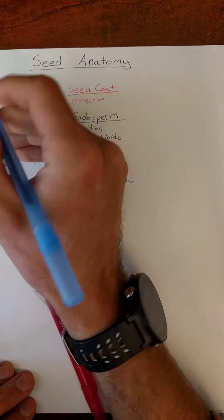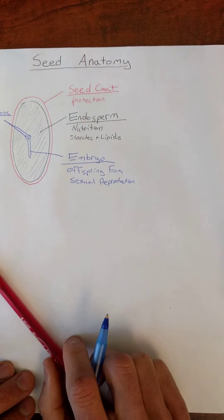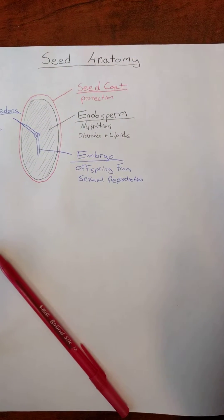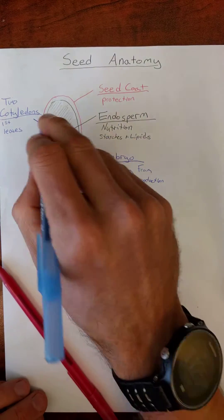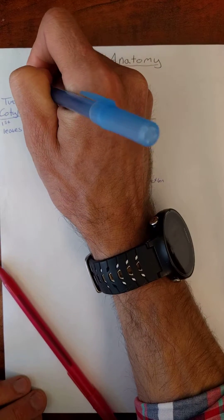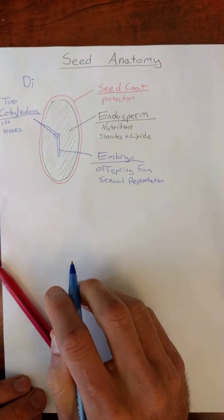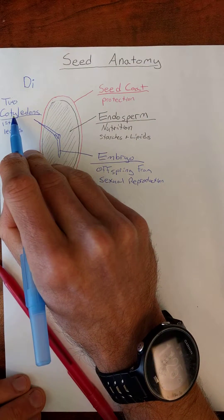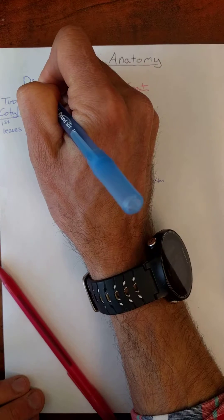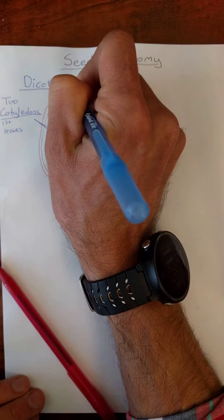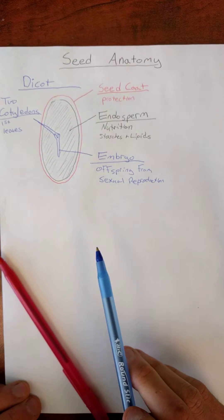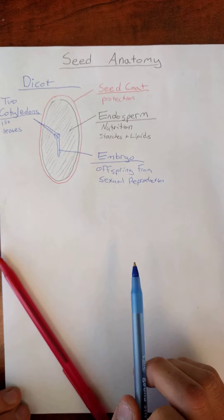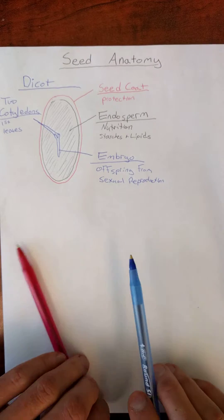So, we're going to take that two, make it a scientific word. Two cotyledons. We're going to take that two, make it scientific. Di, meaning two. And we're going to abbreviate cotyledons to cot. This is a dicot seed. Named after the fact that the embryo has two cotyledons, two first seeds, or two first leaves.